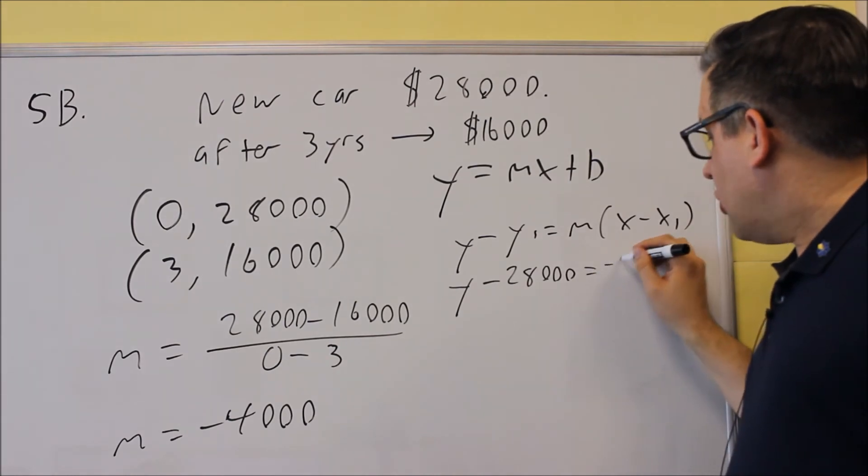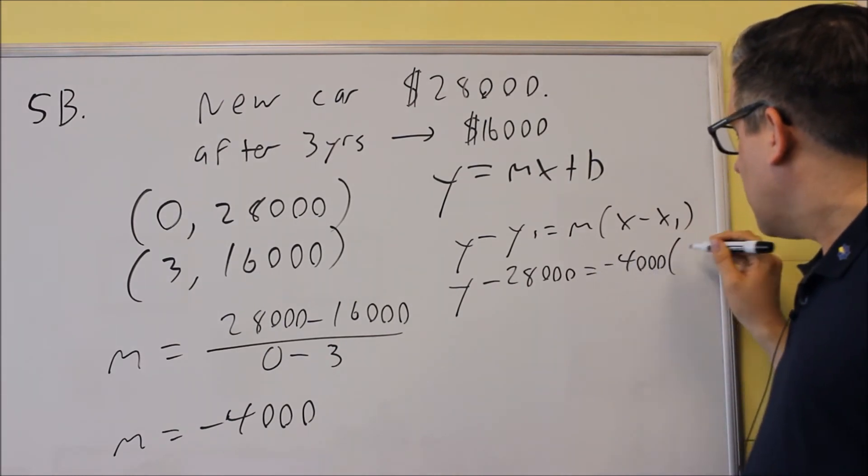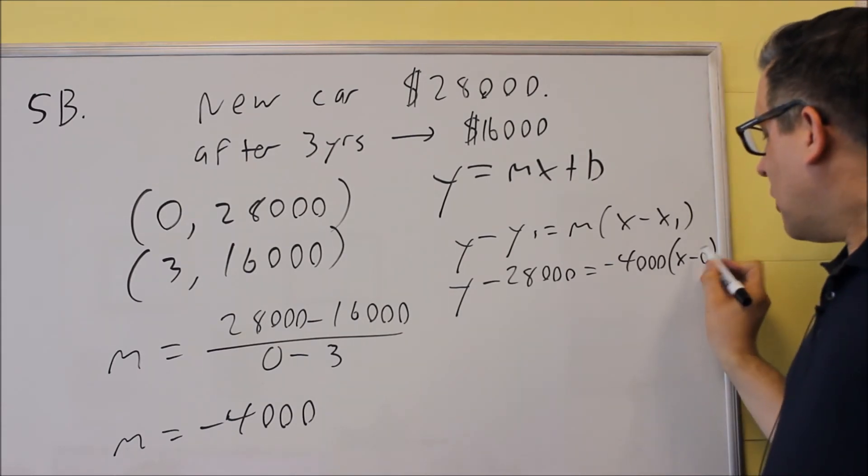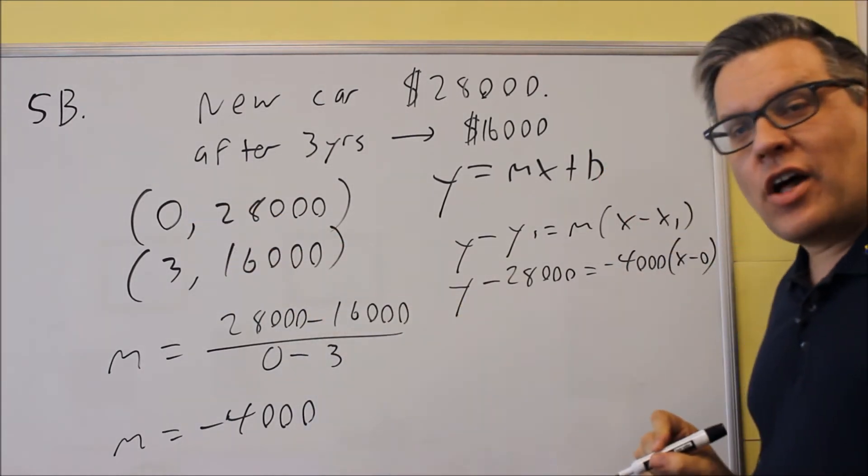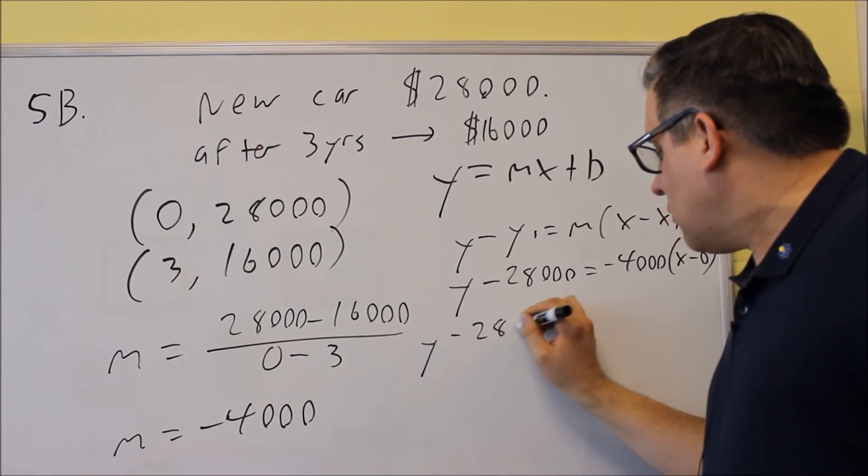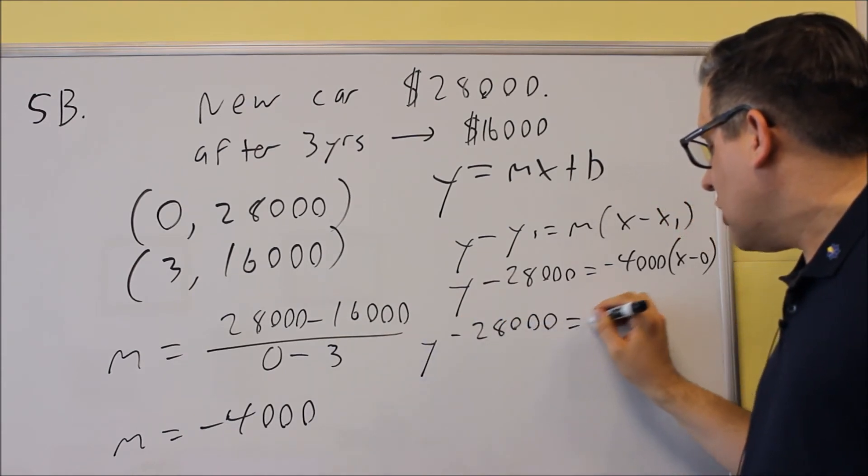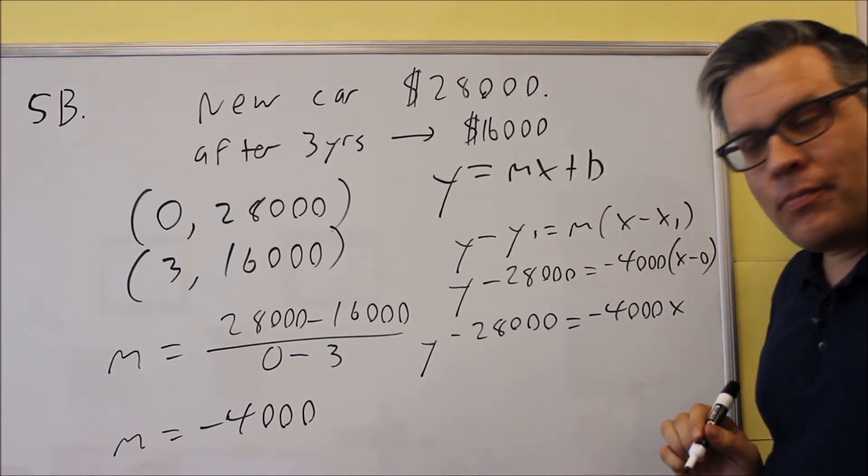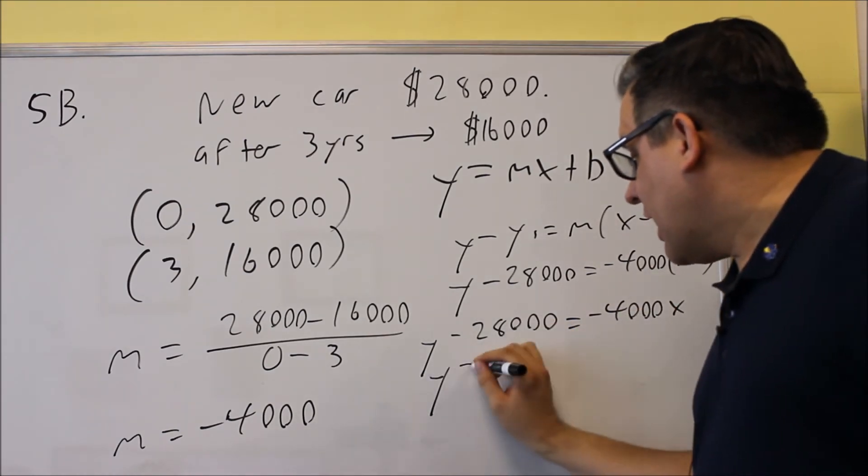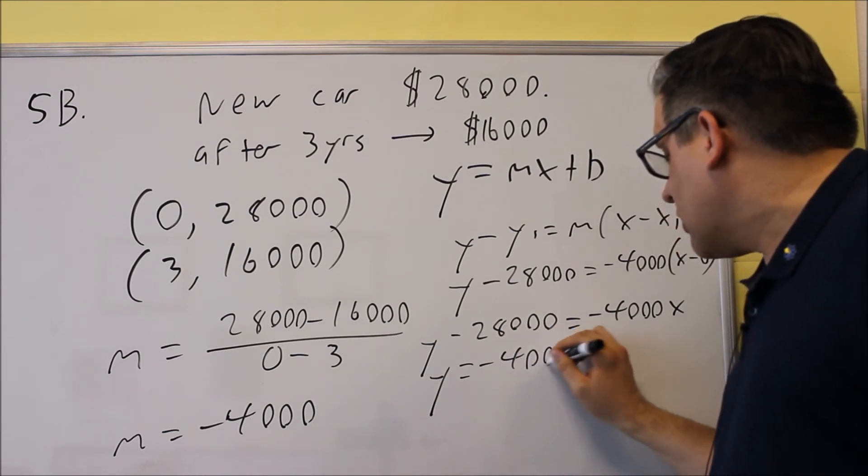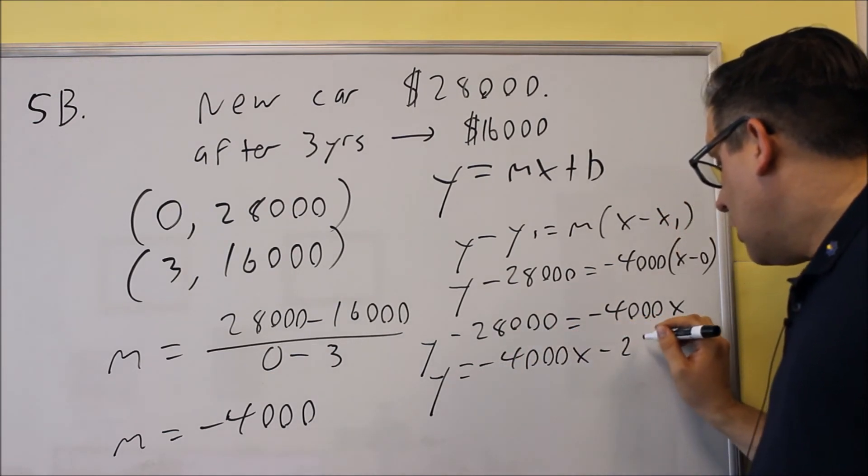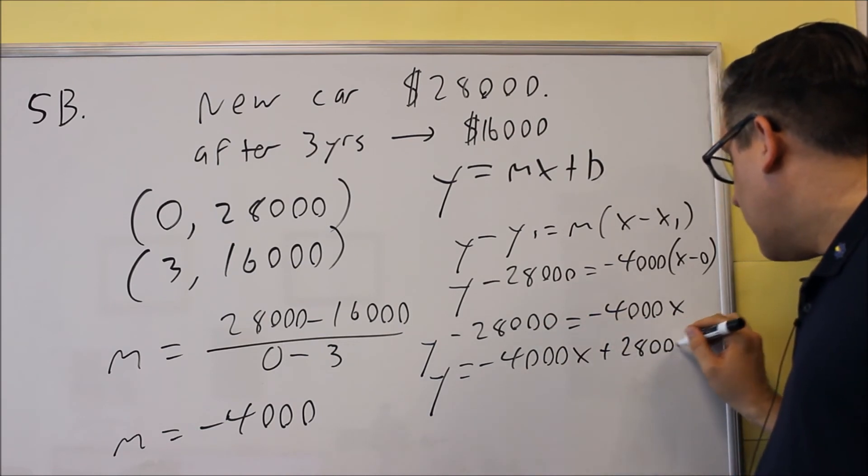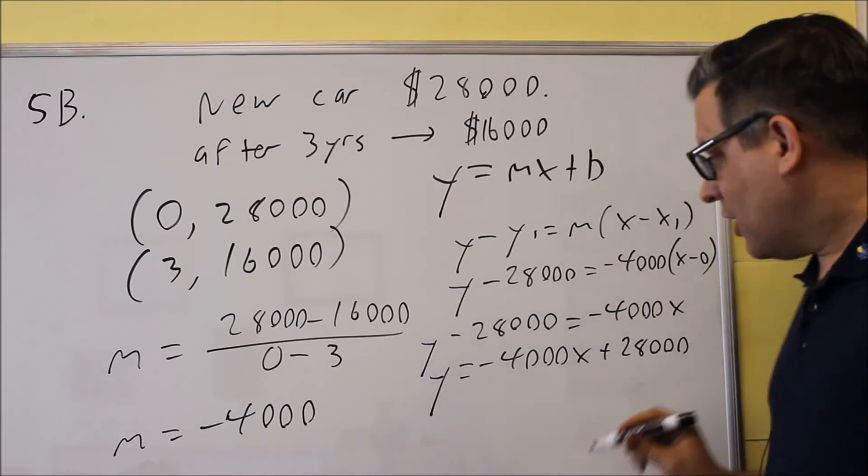M equals negative 4,000, and x minus 0. The 0 was the x value. Simplifying: y minus 28,000 equals negative 4,000x. Adding 28,000, I get negative 4,000x plus 28,000.